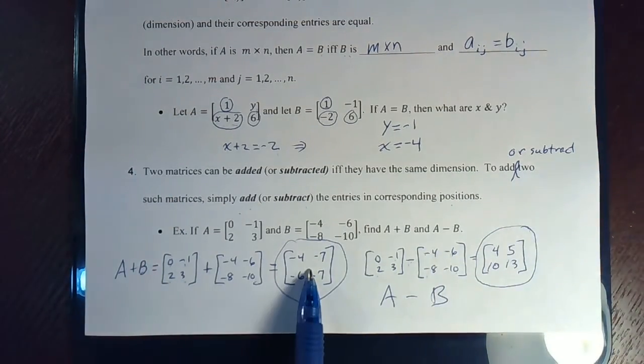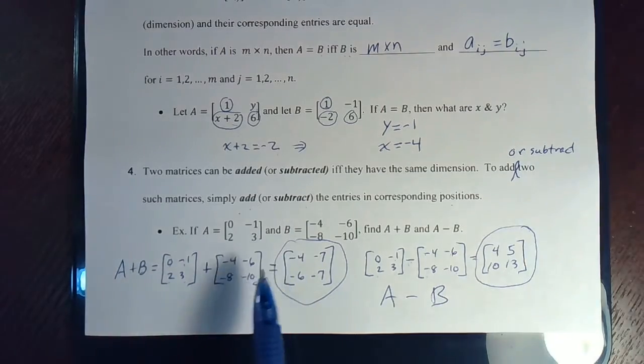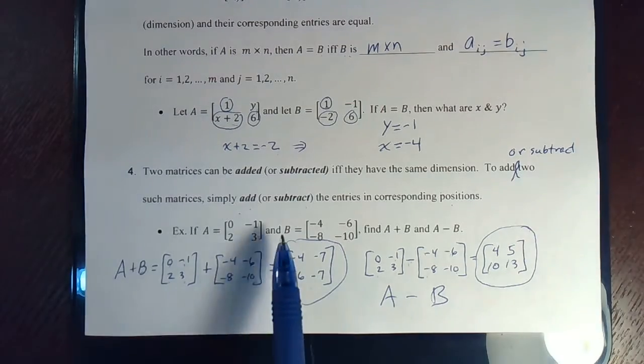So, that is A minus B. So, I'll circle A plus B and A minus B. The important thing is to remember, you can only add or subtract two matrices if they're the same size. And then all you do is either add or subtract corresponding entries.